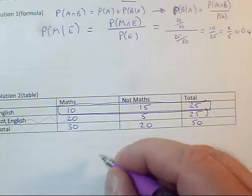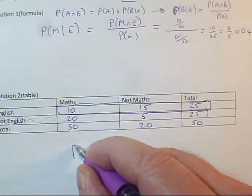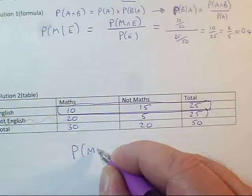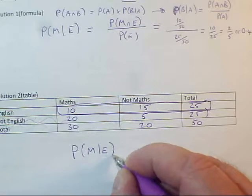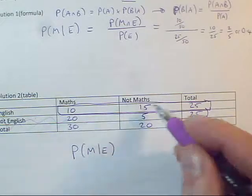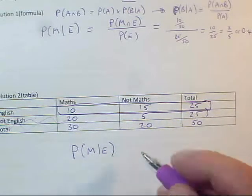So how many students am I talking about? I'm going to just set up the fraction. It's going to be the probability of studying maths, given they study English. But given it's English, I'm just looking at this row of the table. So how many students could it be?